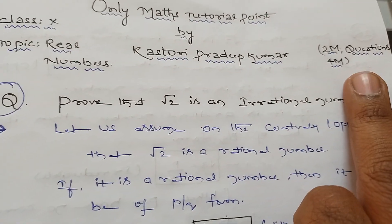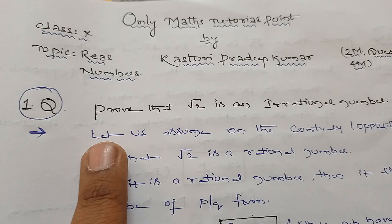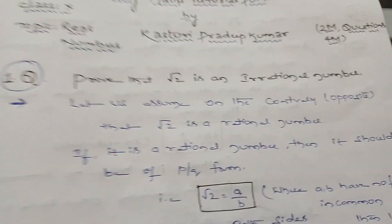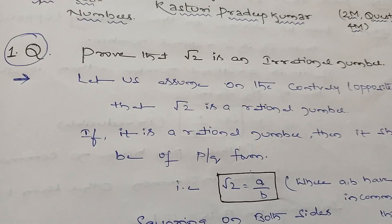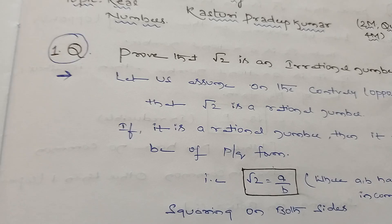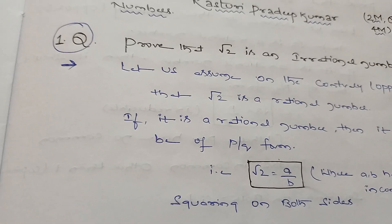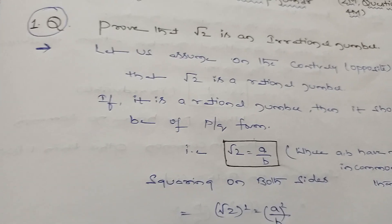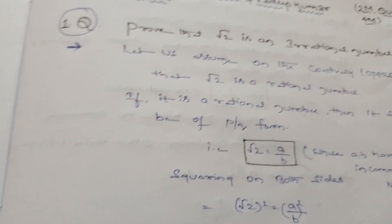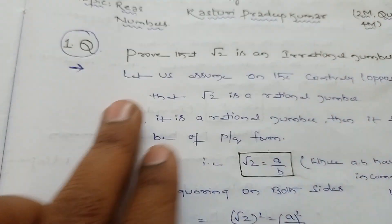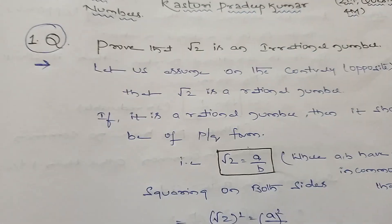We need to prove that √2 is an irrational number. To prove this, we should take the given irrational number as a rational number by assumption, then solve in that way. If we get the result as a false statement, then the given statement is true. Let's solve.